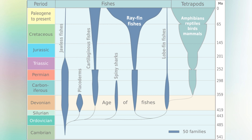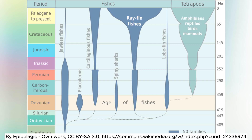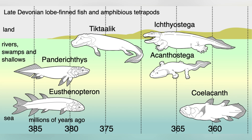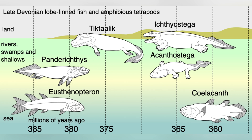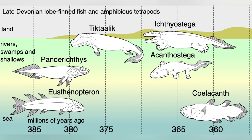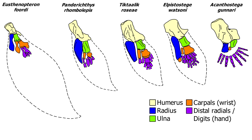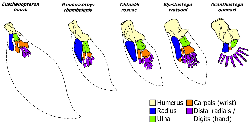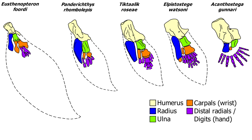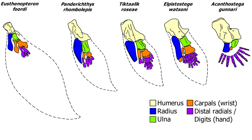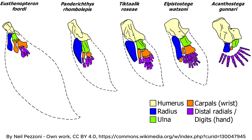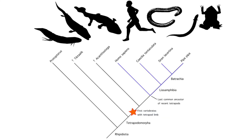This journey began over 375 million years ago during the late Devonian period, when the first tetrapod ancestors of all land-dwelling vertebrates began to emerge. These early tetrapods evolved from lobe-finned fish like Tiktaalik, which had fin-like limbs capable of supporting movement in shallow water. While Tiktaalik had primitive limb structures, it didn't yet have fully formed digits.